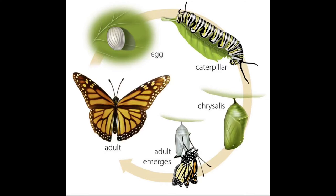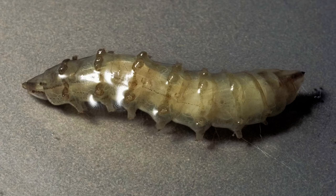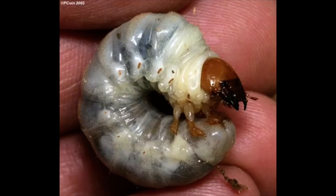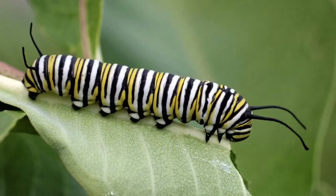the larvae that emerge look like worms. The word larva is singular, meaning one, and the word larvae is plural, meaning more than one. Different names are given to different insects in this worm-like stage. For the butterfly, the larva stage is called a caterpillar. Fly larvae are called maggots. Beetle larvae are called grubs. And the larvae of butterflies and moths are called caterpillars.